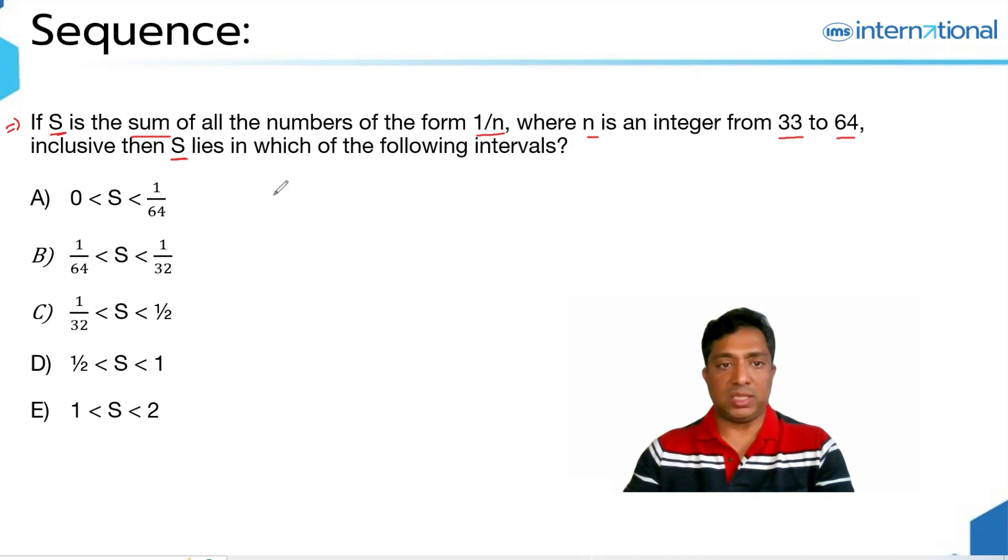Coming to the question, let's collect what is given. You have that n is given to be a set of numbers from 33 to 64: 33, 34, 35, so on, up to 64.